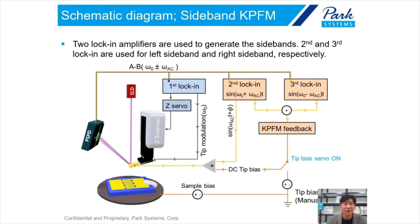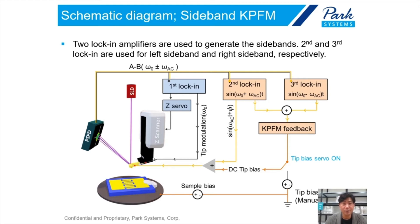This figure shows the schematic diagram of sideband KPFM. The setup is similar to AM KPFM — the first lock-in amplifier is for topography/height image, and another is for electrical property measurement. But in sideband KPFM, we need one more lock-in amplifier — a third one. These two lock-in amplifiers are used to generate the sideband: the second one is for the left sideband peak and the third one is for the right sideband peak.